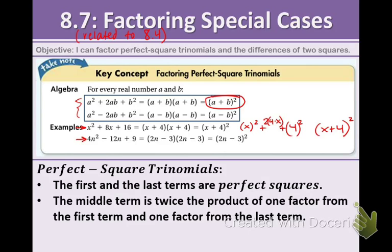Let's take a look at another one. 4n² - 12n + 9 can be written as (2n)² and 3². Let's check: 2 times 2n times 3 equals 12n, so it works. You take the 2n and the 3, put a subtraction sign in the middle and square it: (2n - 3)².